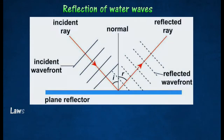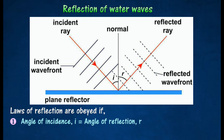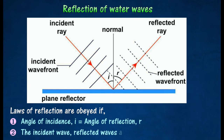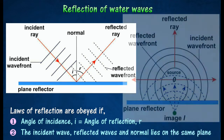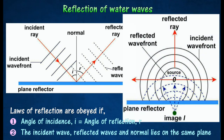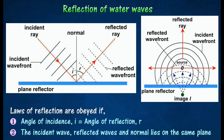The laws of reflection are obeyed, that is, the angle of reflection R is equal to the angle of incidence I. The incident wave, reflected waves, and normal all lie on the same plane. The incident waves at the reflectors may be plane waves or circular waves.